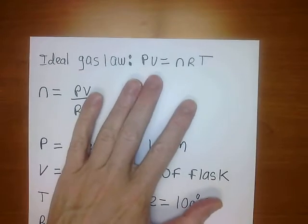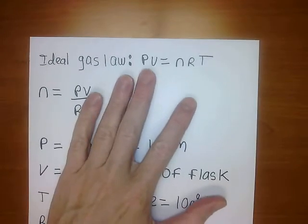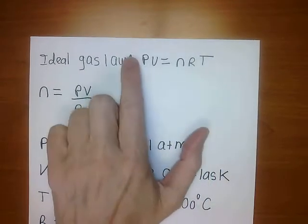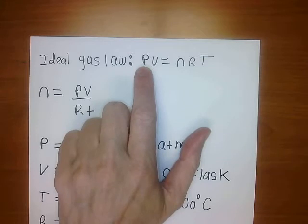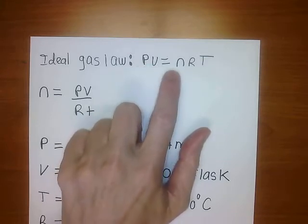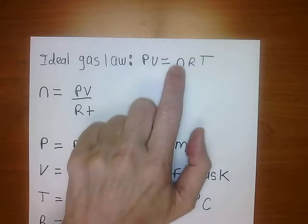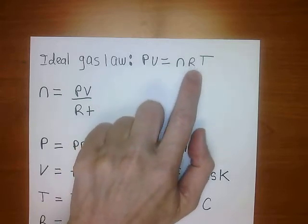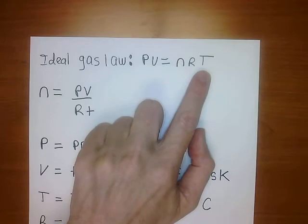The ideal gas law is PV = nRT. P represents pressure, V represents volume, n represents number of moles, R is a constant, and T is the temperature.